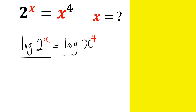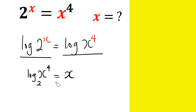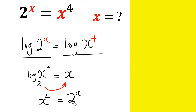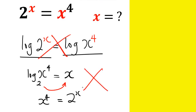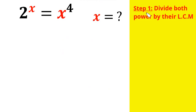And if we approach this Olympiad question like this, we're going to end up having log of x raised by the power of 4 base 2 equals x, and we're going to end up from where we started — that is, x raised by the power of 4 equals 2 raised by the power of x, which is where we started. This simply means applying the natural log to both sides is not going to work.